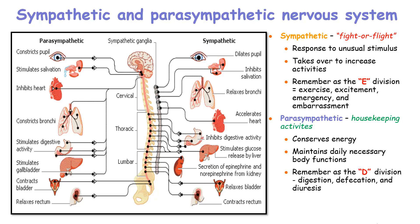The sympathetic nervous system will dilate the pupils, inhibit salivation, relax the bronchi, accelerate the heartbeat, inhibit digestive activity, stimulate glucose release by the liver, and stimulate the secretion of epinephrine and norepinephrine from the adrenal glands. It will also relax the bladder and contract the rectum. These are the activities that take place in a fight or flight situation, and they are all controlled by the sympathetic nervous system.